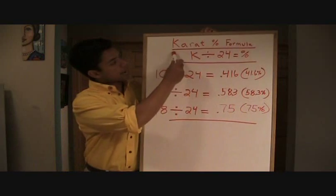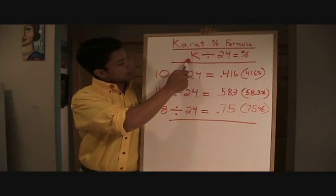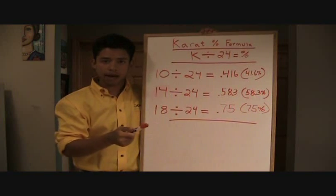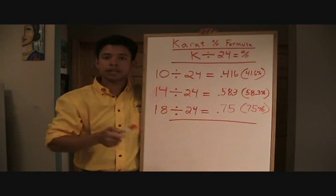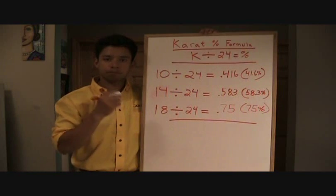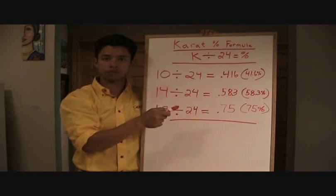To begin, our carat percent formula goes as follows: carat of the gold that you have divided by 24 equals the purity percentage. With pure gold, it's always 24 carats, so that's where 24 comes from.